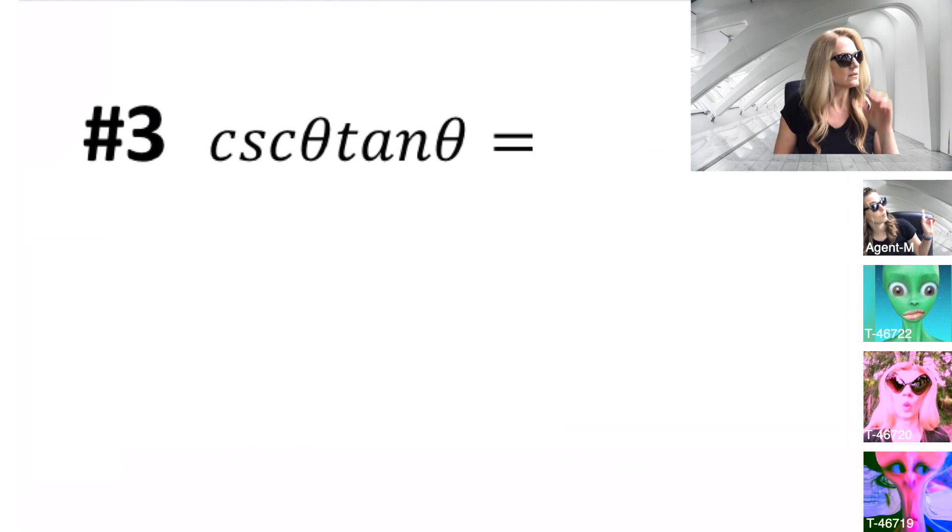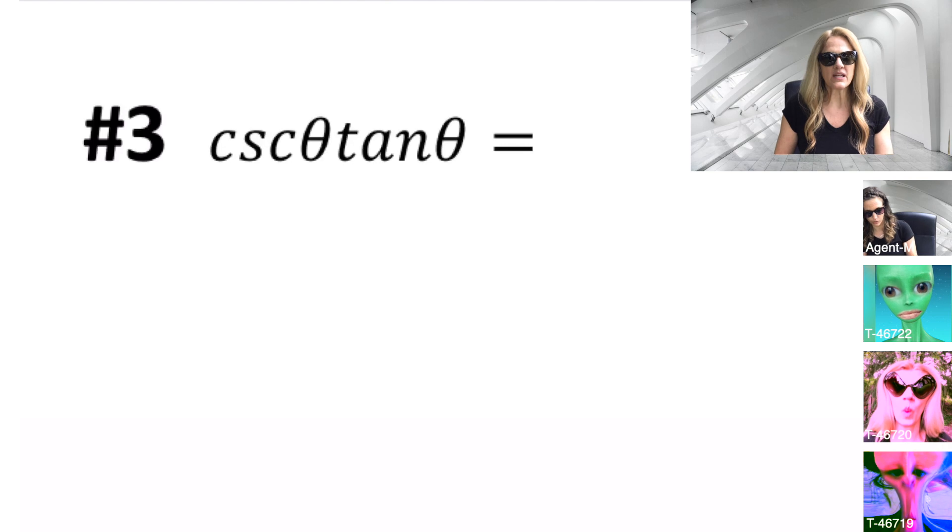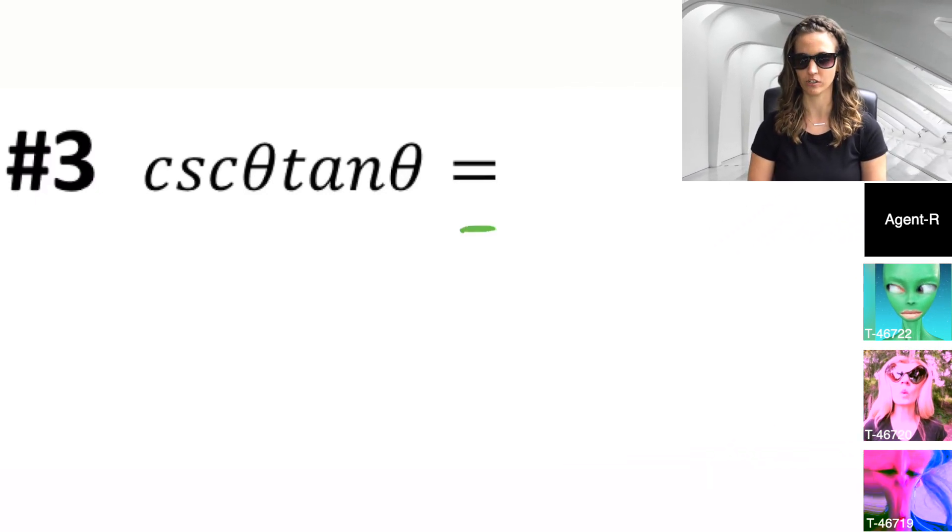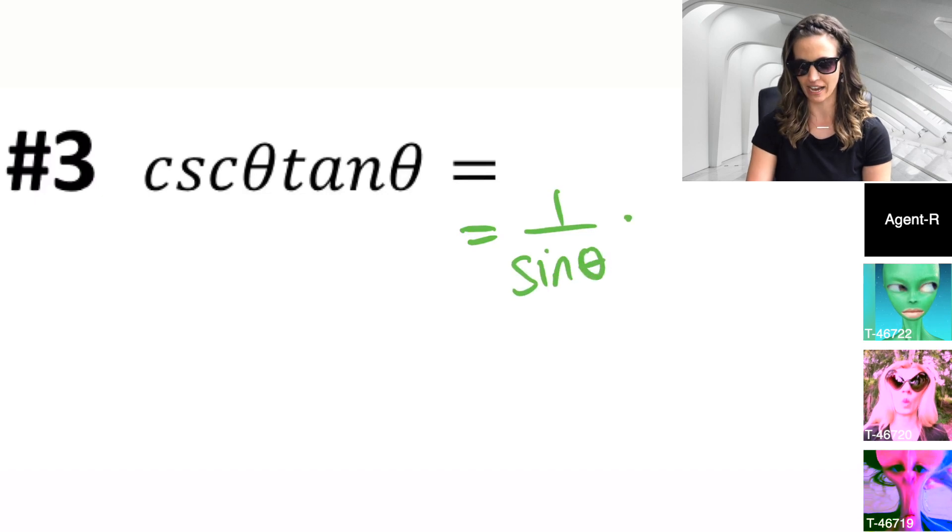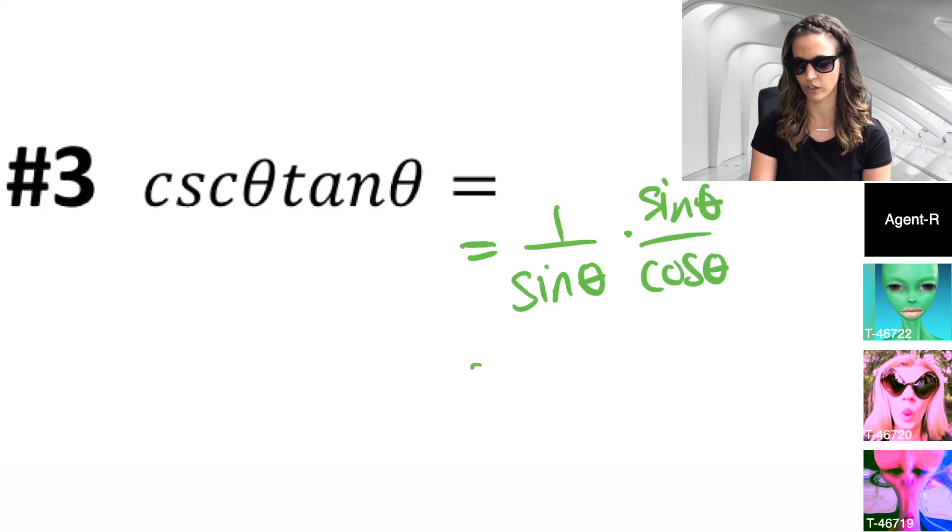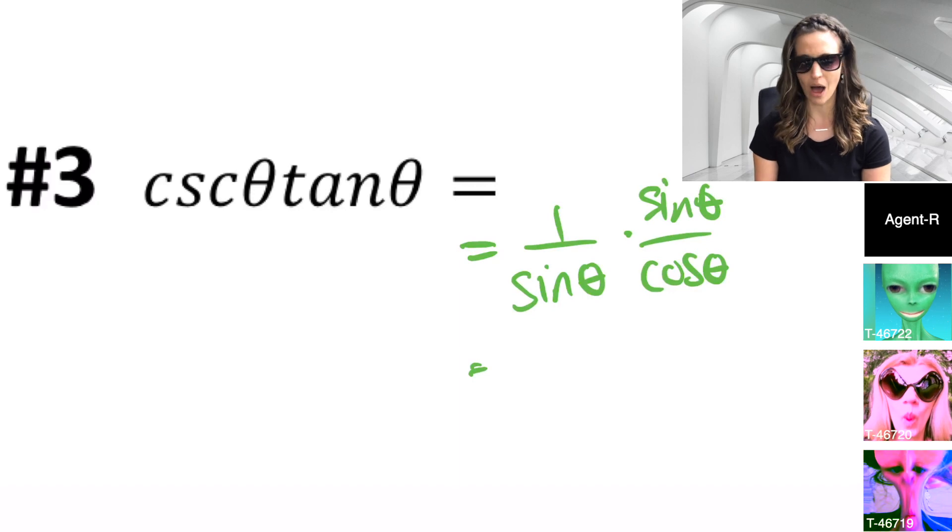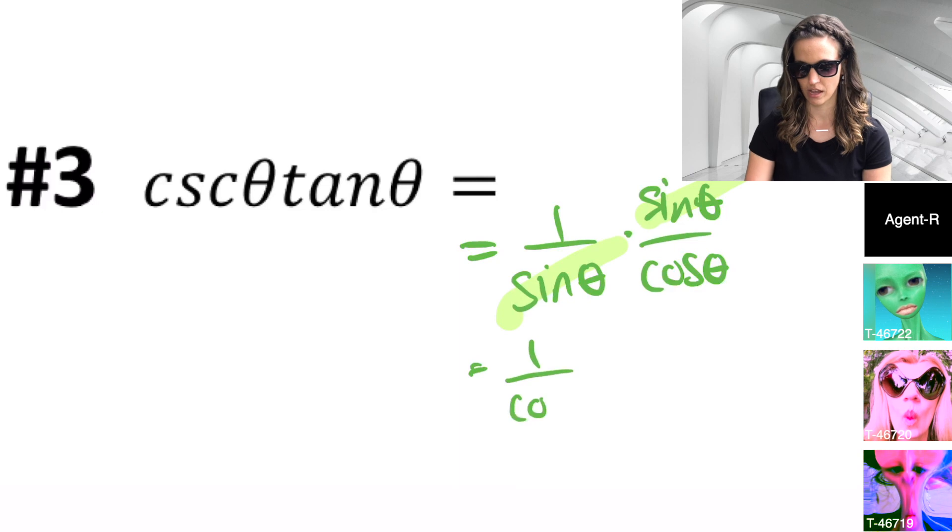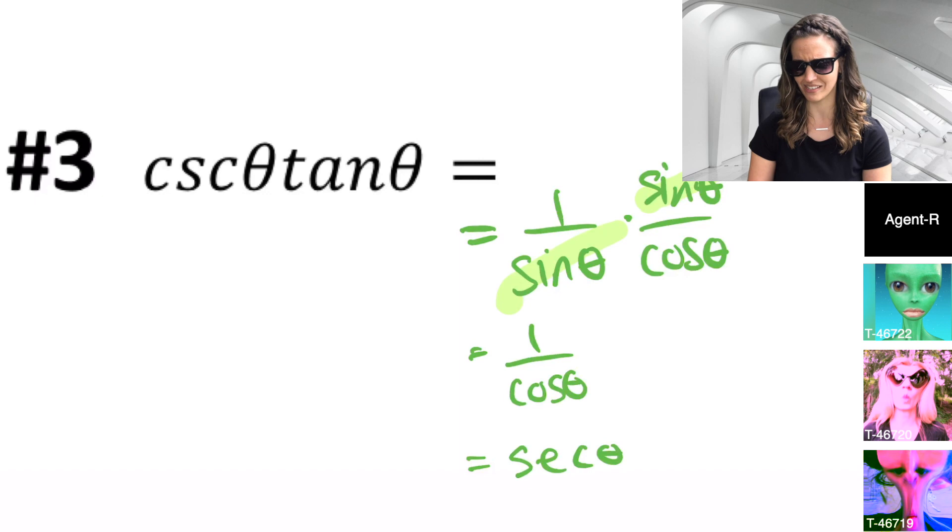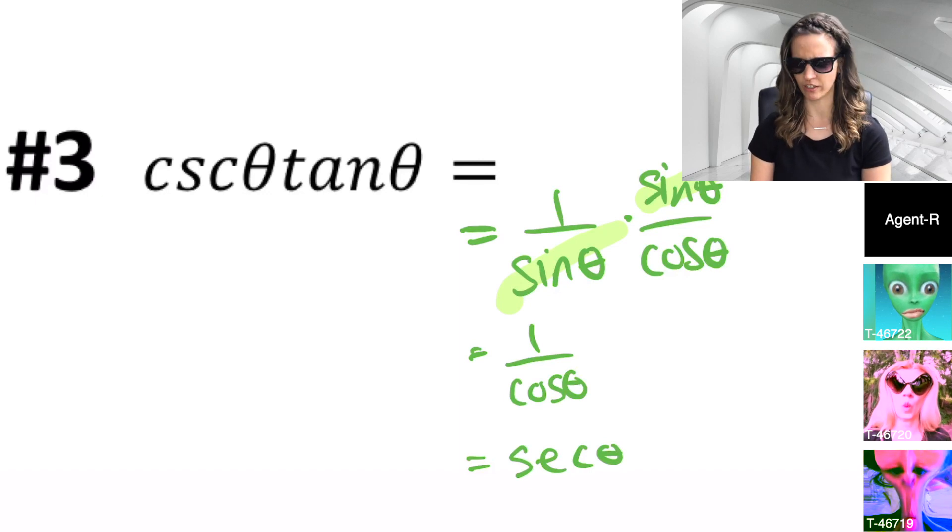Number three. Trainees, I'm needed elsewhere. Agent M, please take over. Thank you, Agent R. Number three. We have cosecant theta tangent theta. None of this is in terms of sine and cosine currently, so we need to do that conversion first. Cosecant theta is one divided by sine theta. Tangent theta, if I would like it in terms of sine and cosine, is sine theta over cosine theta. Now I can see the sines would divide out, and I would be left with one over cosine theta. It's in term of one trig function, but can I do better? One over cosine theta could also be seen as secant theta. We have unmasked this trig expression.